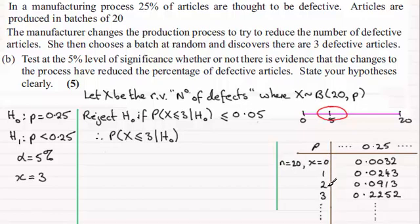And when I look up the probability of X being less than or equal to 3, I can see that it's 0.2252. So we get that this is equal to 0.2252. And when I compare this, this is just over 22%, it's clearly greater than the 5% that we've got here. So that's greater than 0.05.